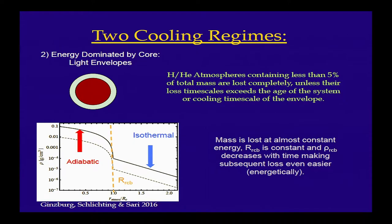So if these planets formed in one scenario together, you actually expect a bimodal final outcome: planets that lost their entire envelopes, and a population that basically kept a few percent of their total mass in gas. The only thing dividing those two outcomes is the fraction of mass in the hydrogen-helium envelope compared to the core — essentially the heat capacity of the system, in physical terms.